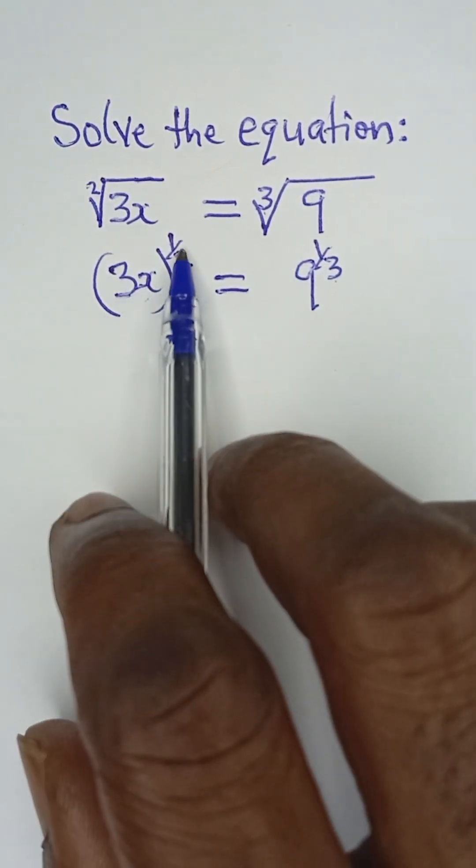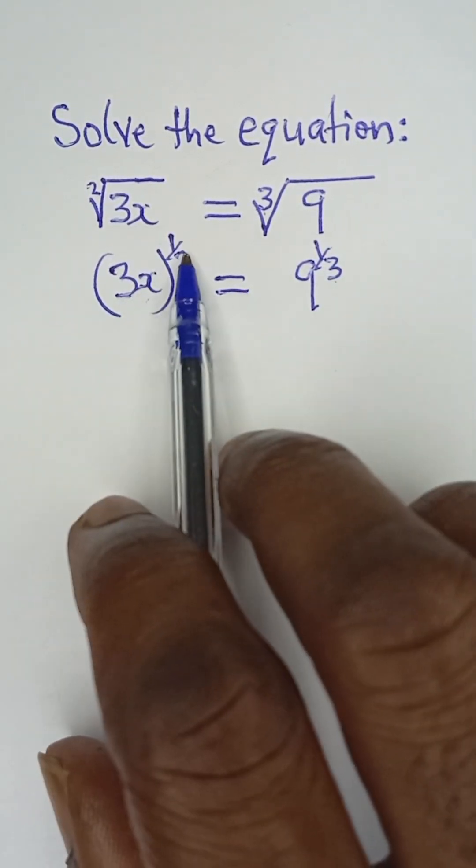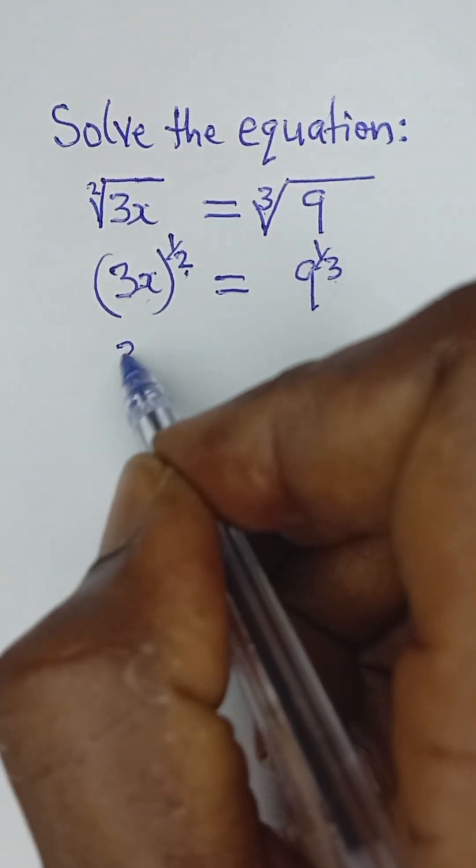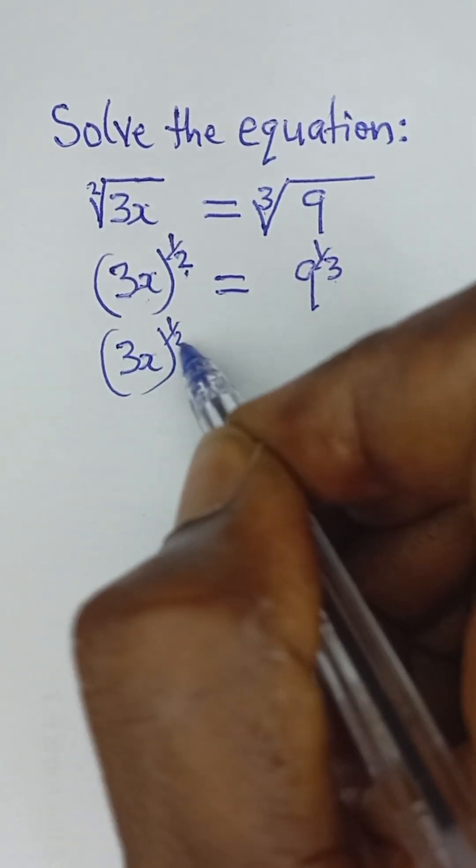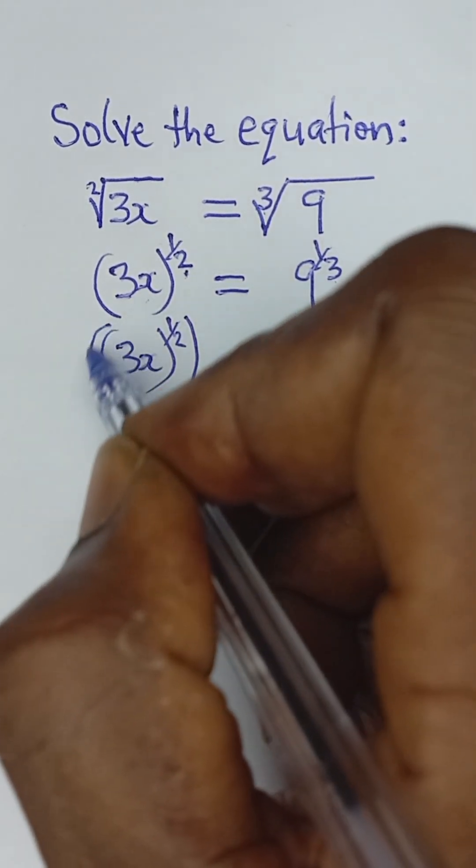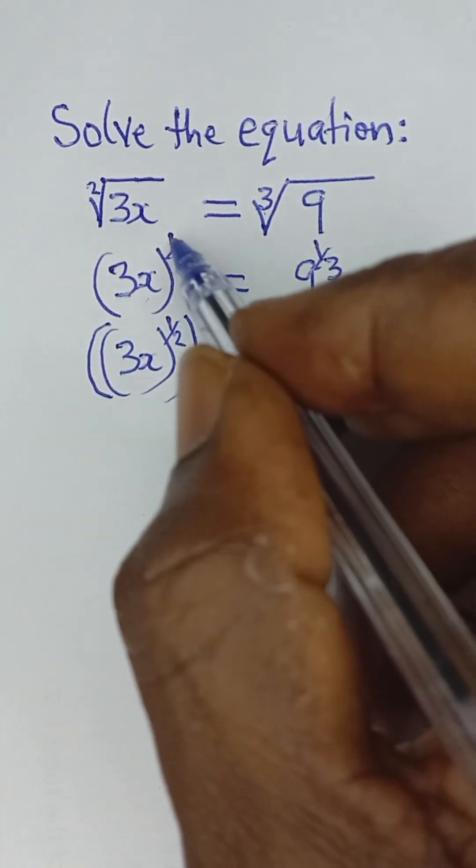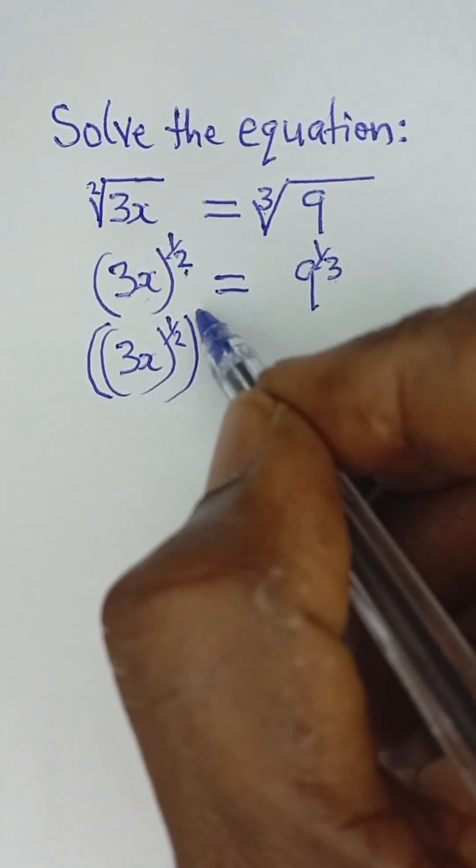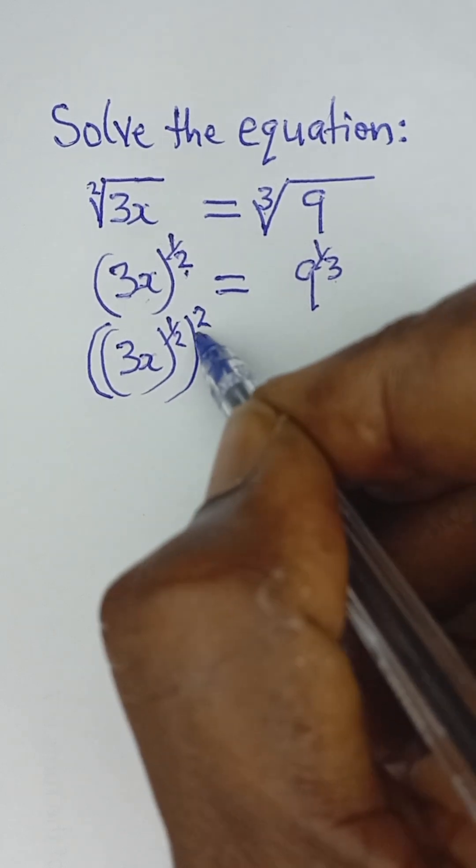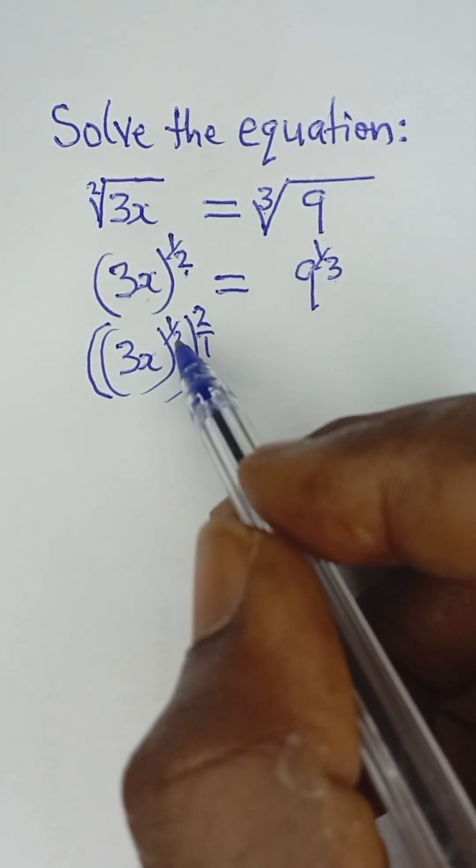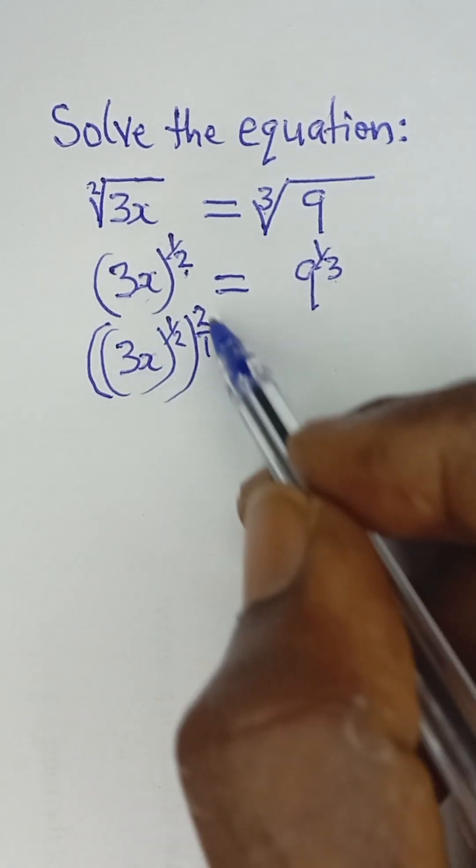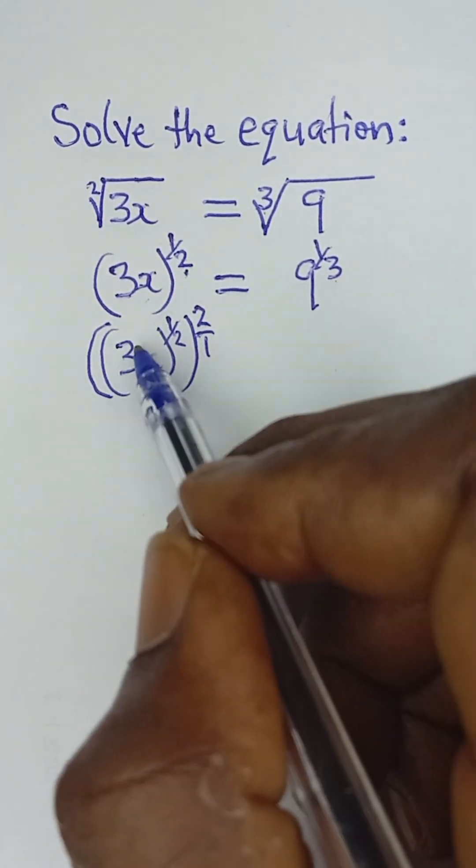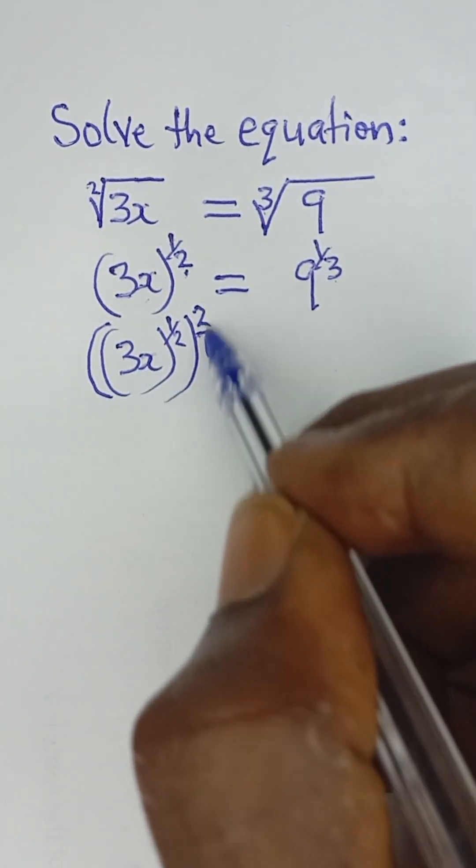Now, to make the power of 3x become 1, we raise (3x)^(1/2) to the power of the inverse of 1/2, which is 2/1. That is flipping this—the inverse of 1/2 is 2/1. So we raise this part to the power of 2.